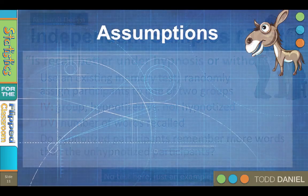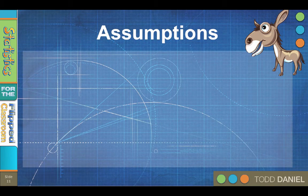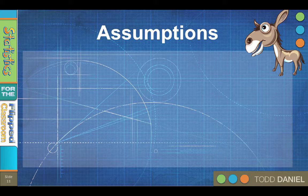Now all inferential statistics are built on certain assumptions. If your assumptions are wrong, then your conclusions could be wrong. So it is important that you check your assumptions. There are some assumptions of the independent samples t-test that you can get away with violating and others you absolutely cannot.